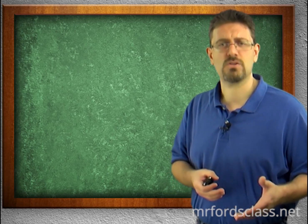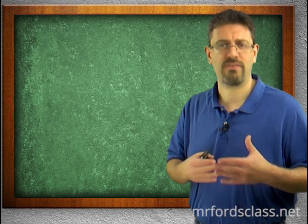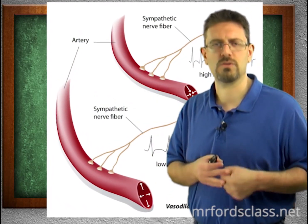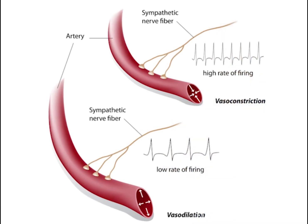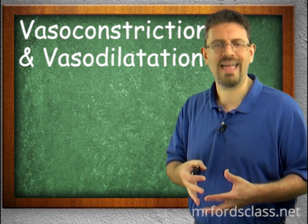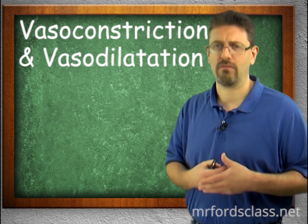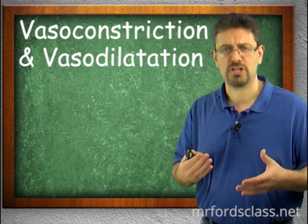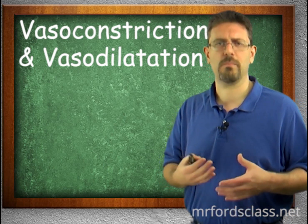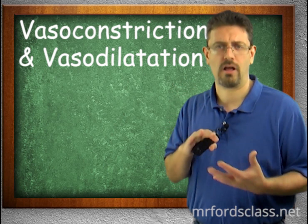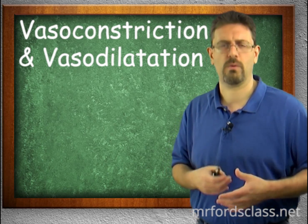Vasoconstriction is associated with the sympathetic nervous system — the fight-or-flight response. When the sympathetic nervous system kicks in, it sends signals that cause blood vessels to constrict. This ability to vasoconstrict is so powerful that a person can lose up to 25 percent of their total blood volume and the system will still function. In cases of hemorrhage or trauma, the body vasoconstricts to cut blood off to the affected area and keep the remaining blood flowing properly.